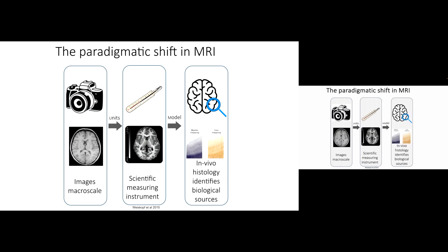When we have these units, we don't only have physics — we can also have biology. We can actually model the underlying tissue: say what happened in the tissue that makes a change in the water environment, what change in the water environment we are capturing. With that, we're doing something called in vivo histology — we try to assess the underlying tissue, the biology itself. I call it in vivo histology. Let's just check what histology is.